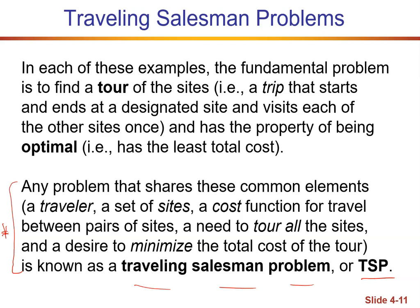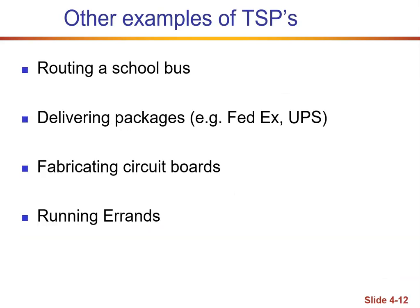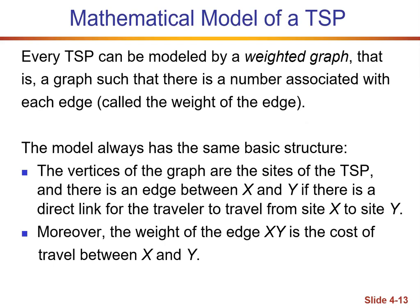There are various examples of that. Here are a few other ideas: routes of a school bus, delivering packages, UPS, FedEx, fabricating circuit boards, running errands. Every traveling sales problem can be modeled by what we call a weighted graph — a graph such that there is a number associated with each of the edges, which we did not have in the previous unit at all.